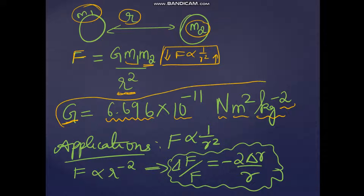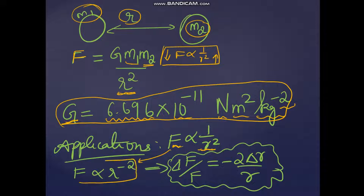In exams they will ask the dimensions of the universal law of gravitation, and you must also know the applications of this law. Since F is inversely proportional to r square, I write it as F proportional to r power minus 2. Fractionating it: ΔF/F = −2 · (Δr/r). The negative sign indicates that if the distance increases, the force decreases.